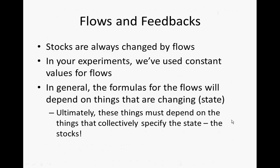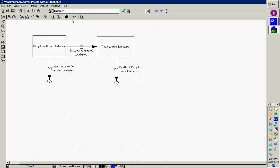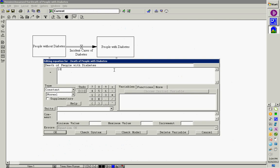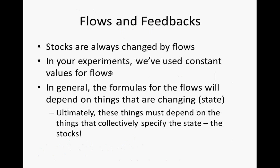Stocks are changed by flows, and we've used constant values for flows. But in general, the formulas for the flows will depend on things that are changing. With this model we've just put in, we have fixed values for the flows. In general, the values of those flows will depend on state. And what keeps the state in a system dynamics model? The stocks. So ultimately the flows have to depend on either constants or stocks.